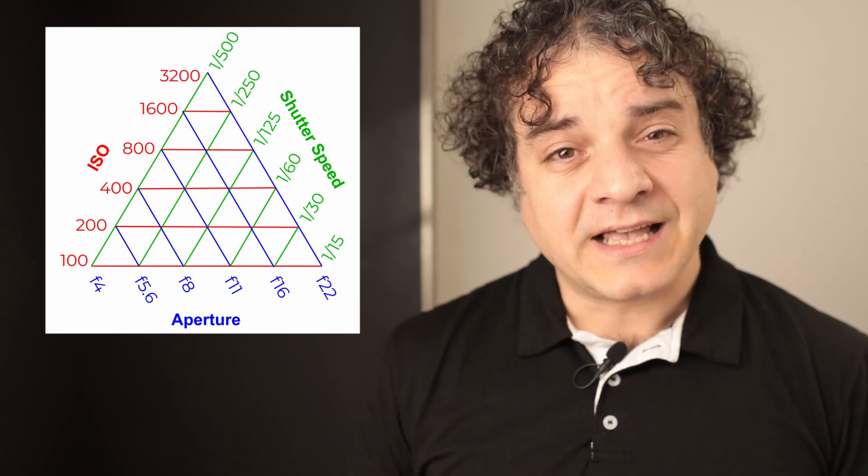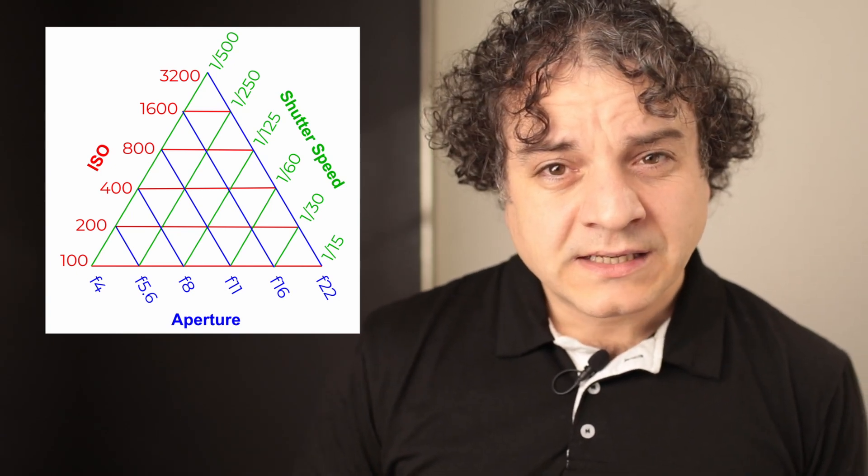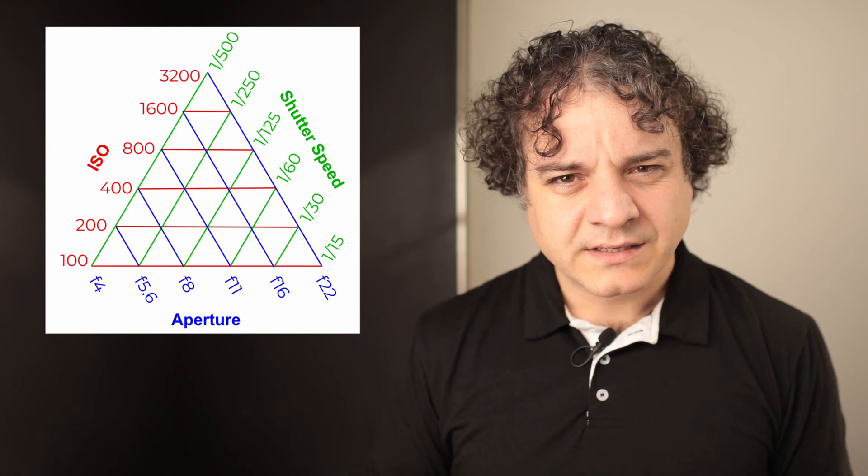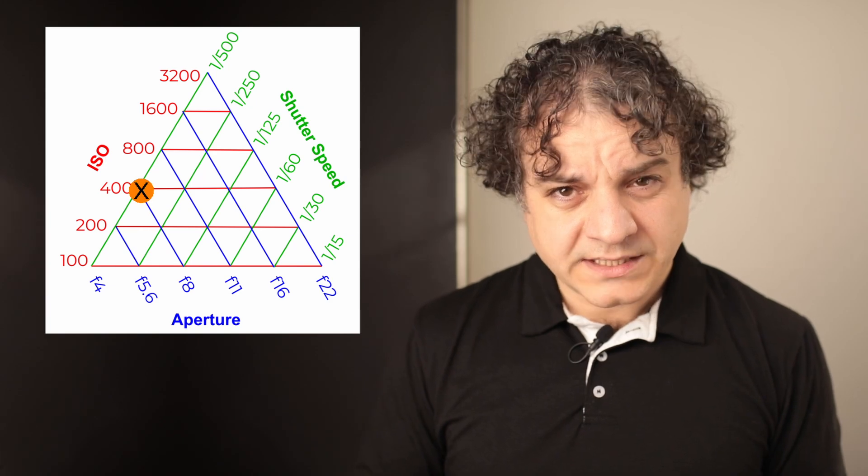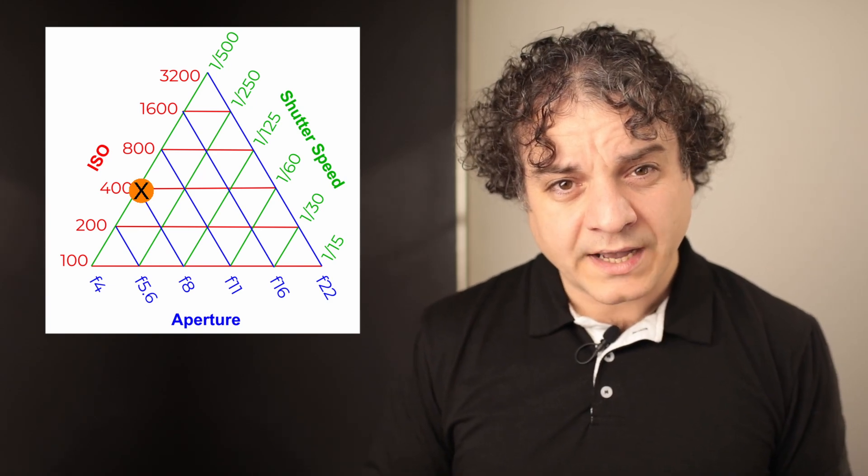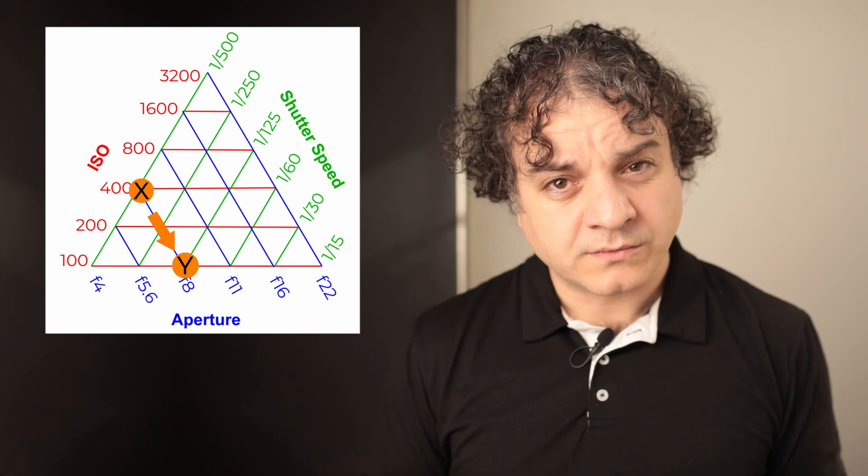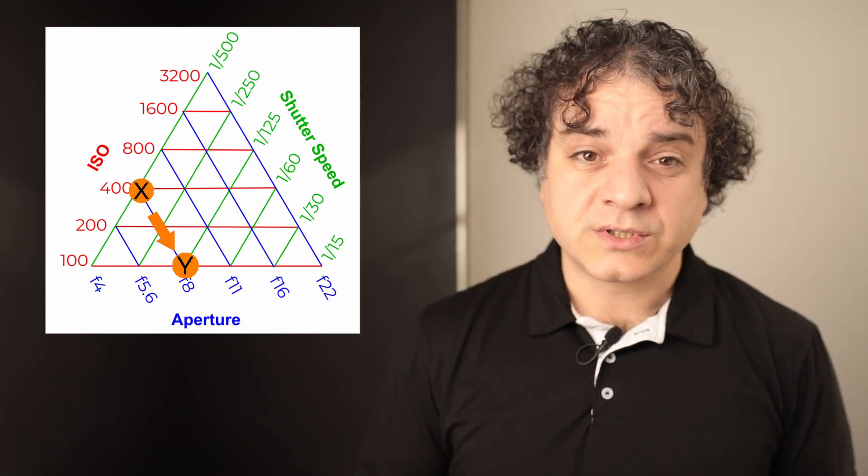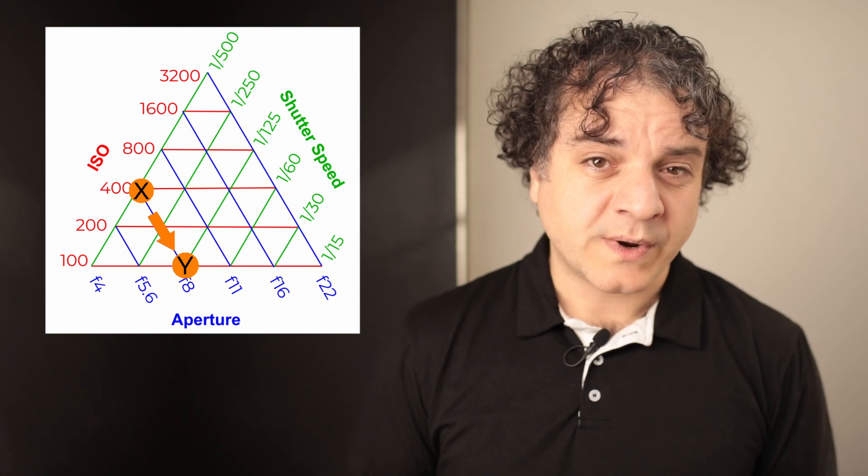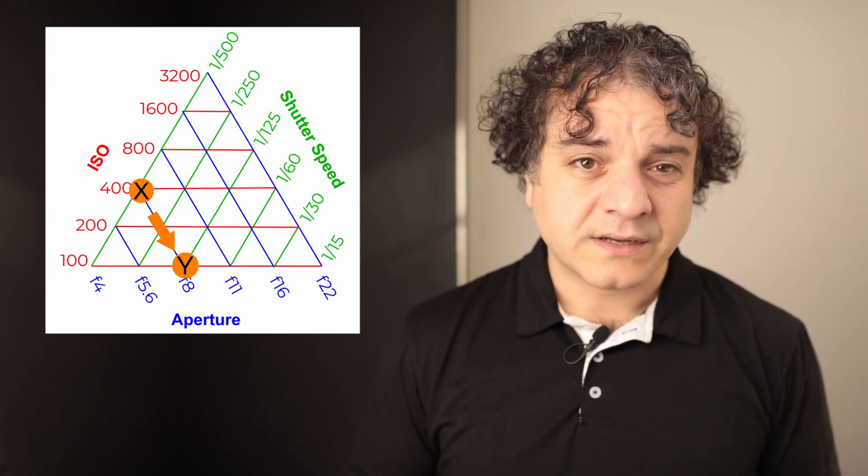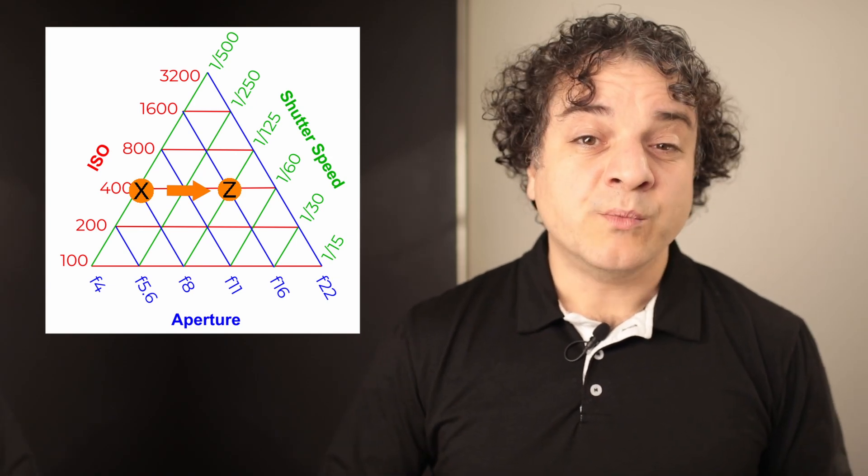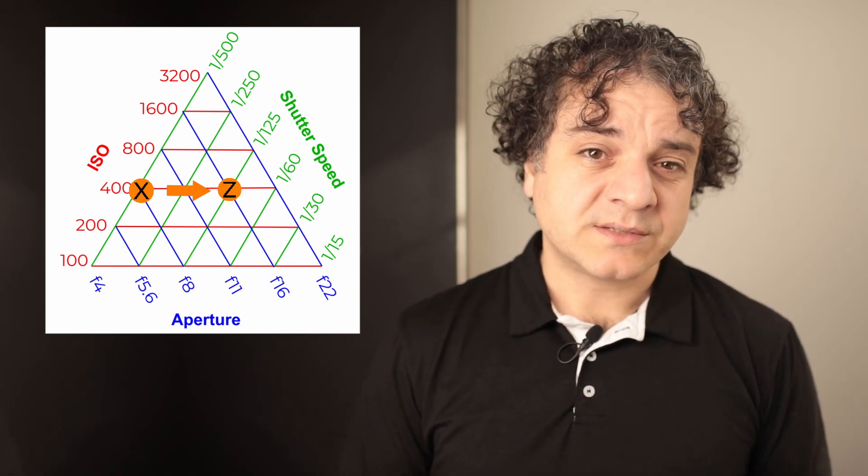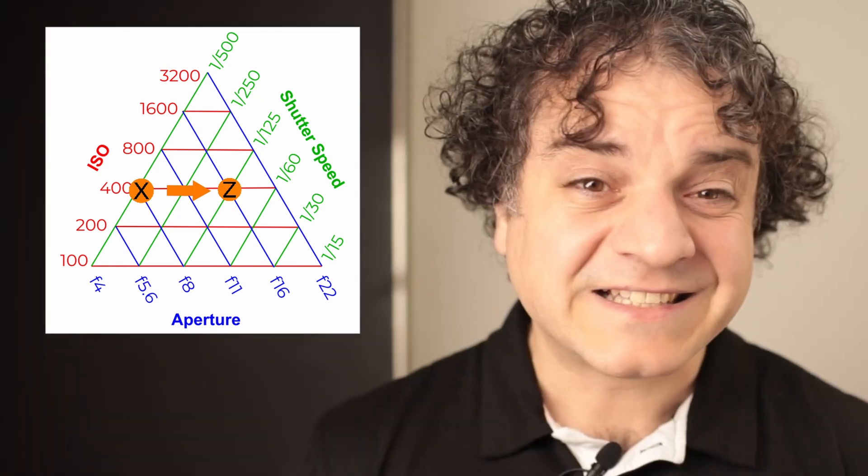Every point in the triangle is the same exposure, 100%. Let's start with some settings. ISO 400, 1/500th of a second, and f8. This is point X. If we move to point Y, then we've lost two stops of ISO. We're down to 100. But we've gained two stops with the shutter now at 1/125th. So it's the same exposure. If instead we go to point Z, then we've lost two stops of aperture, and we've gained two stops of shutter speed. Same exposure again. In fact, any point in the triangle is the same exposure.